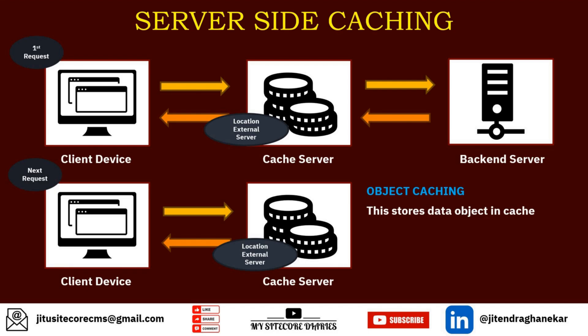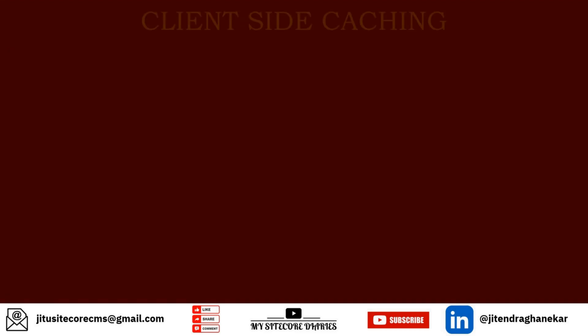With object caching, we are trying to save processing time between the cache and the processing server. We store it on the server side because that data might be sensitive data that you do not want to store on client devices. Then there is CDN caching, which stores pages in multiple cache servers. CDN stands for Content Delivery Network. CDN caching can serve pages to different applications and can also be geolocation-based — for example, one CDN server for India and a separate one for the US.